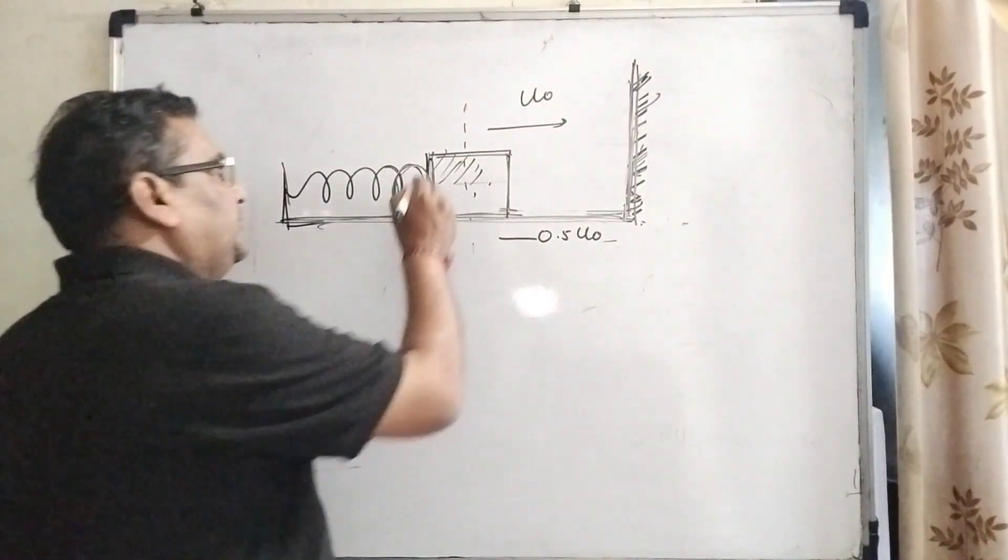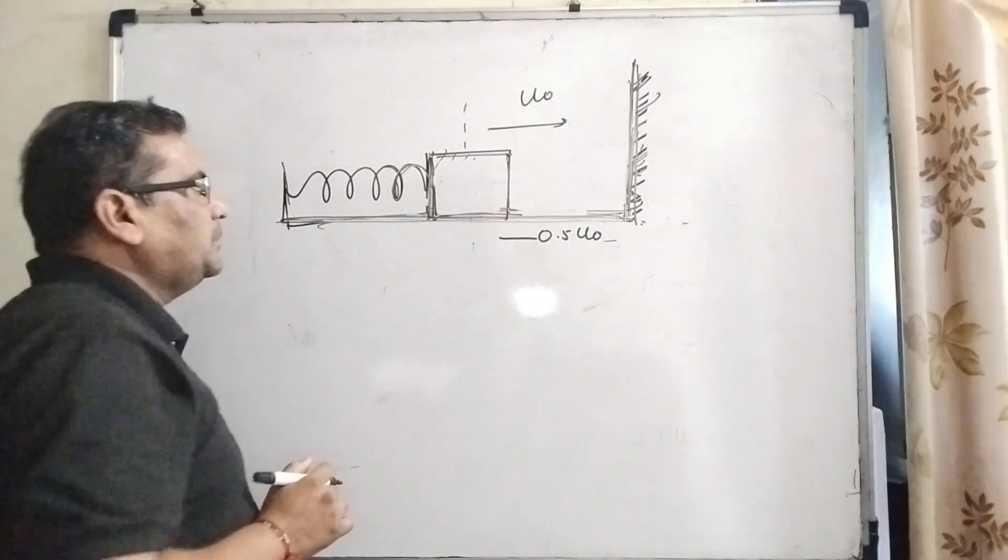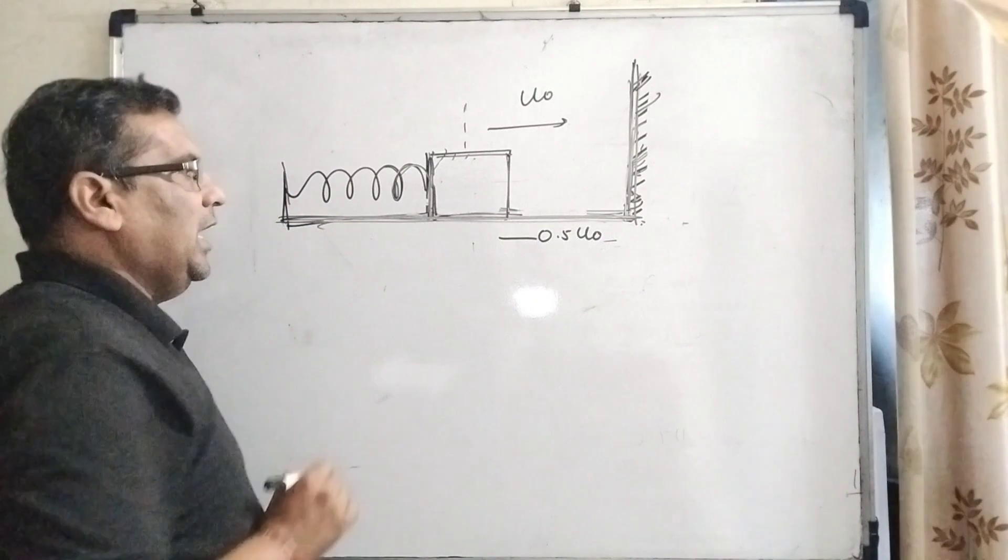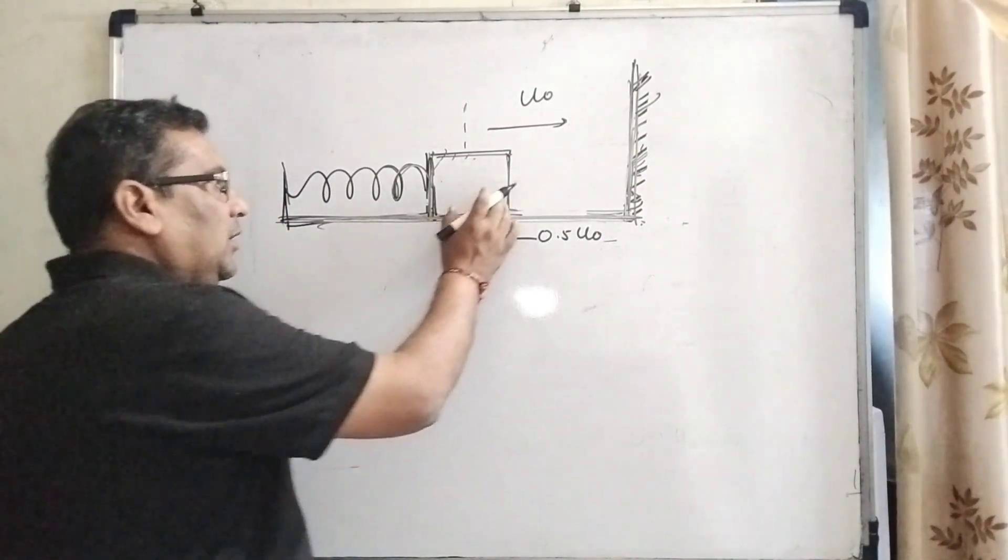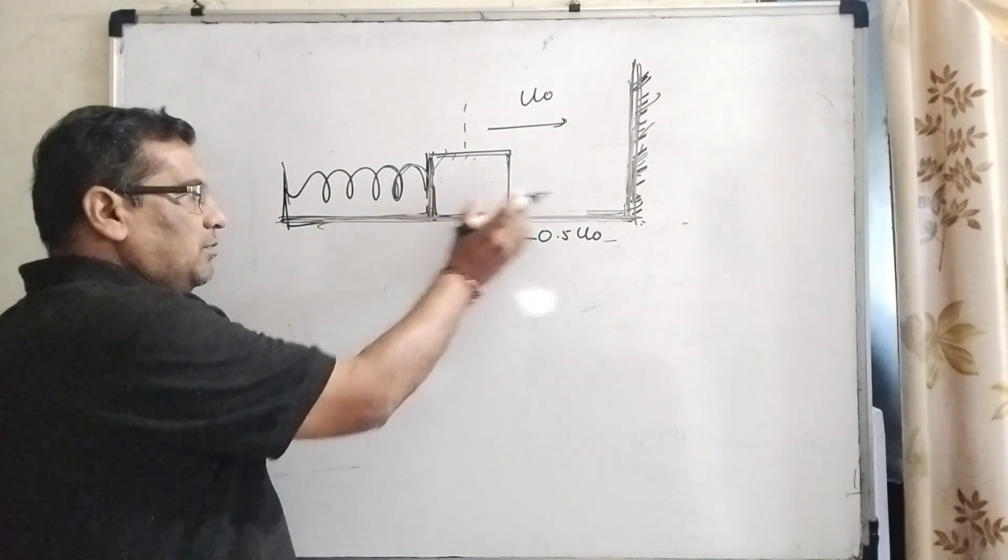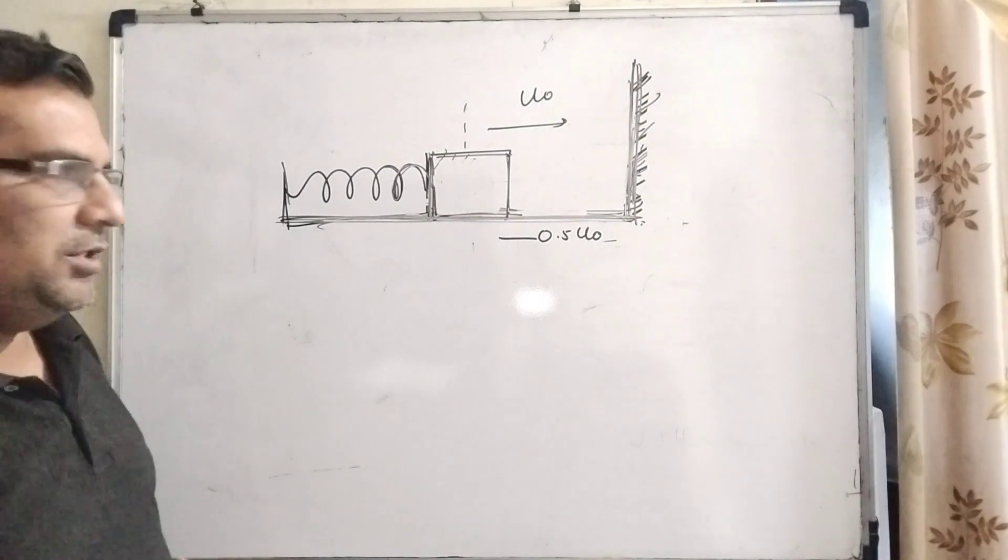In this question we have given a block which is connected to the spring and here is a smooth and frictionless base, and here is the rigid stand or wall. When we give some motion to this block, it will strike and come back, leading to oscillatory motion.